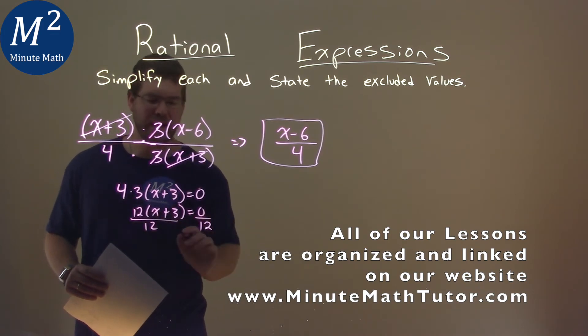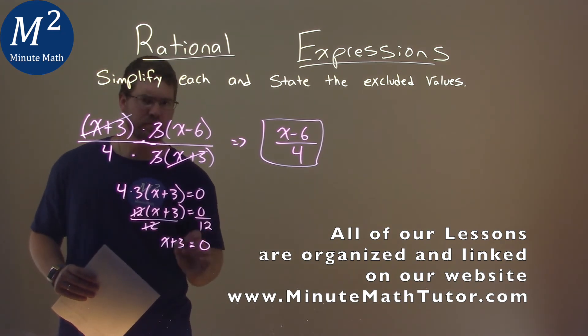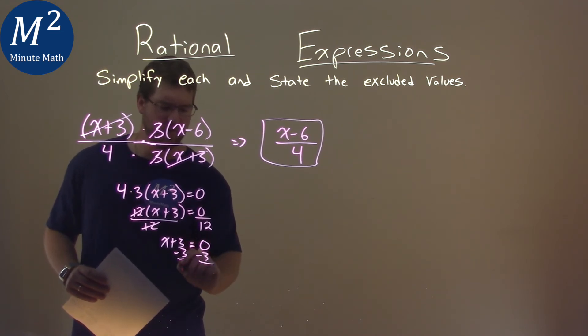We have x plus 3 on the left, and that cancels, and 0 divided by 12 is 0. We subtract 3 from both sides, and we have x equals negative 3.